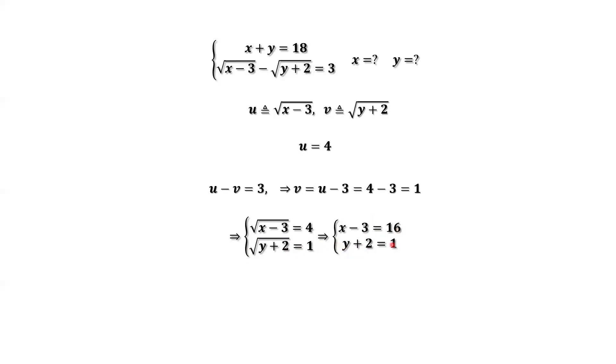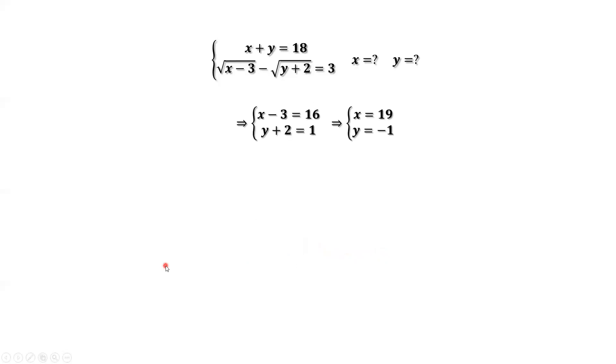We can easily solve this linear system. We have x equals 19 and y equals negative 1.